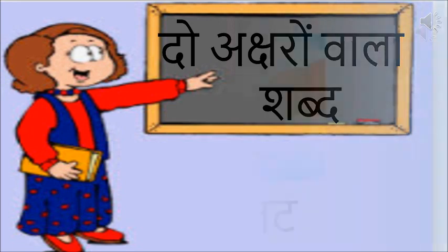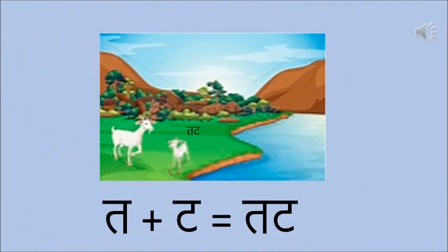The first word is Ttat. Ttat means bank of a river. Can you see the goats out there? That green part is called the Ttat.